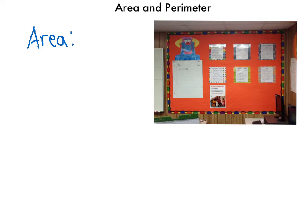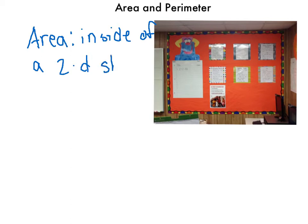So let's say the inside of a 2D shape. And then perimeter — any idea what that is?